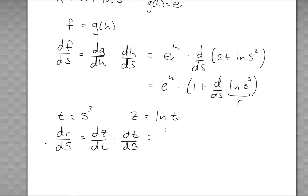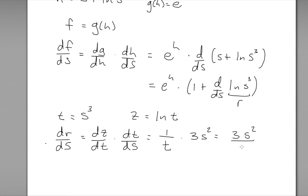The derivative of z with respect to t: now I can use the formula I know — the derivative of ln t with respect to t is just 1 over t — times the derivative of t with respect to s. Using the power rule, that becomes 3 times s squared. I can simplify because t is s cubed, so this becomes 3 times s squared divided by s cubed, and canceling s squared with s cubed leaves just 3 over s.